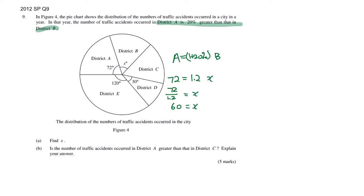It's asking, is the number of traffic accidents occurred in District A greater than in District C? A and C, let's compare them. A we know is 72 degrees. How about C? We do not know it, so we have to calculate it.